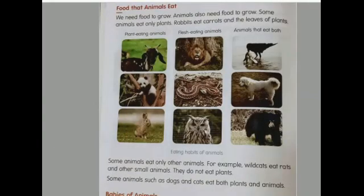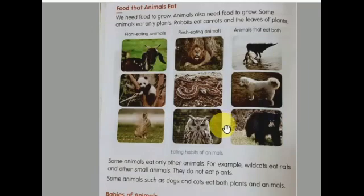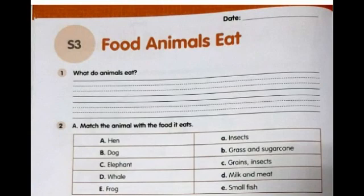Now we will go through the content book. You have to read it: Food that animals eat. See plant-eating animals, flesh-eating animals, and animals that eat both. See the pictures carefully. Now we will go through the workbook — S3: Food animals eat. Please write today's date on the top of the page.